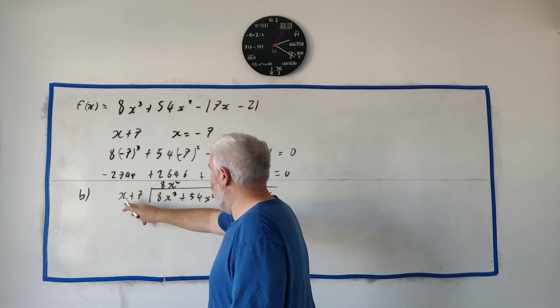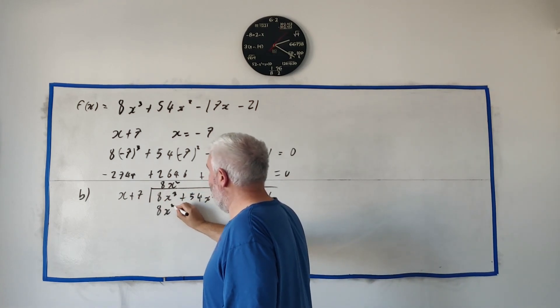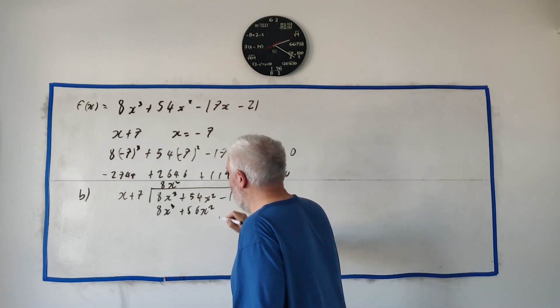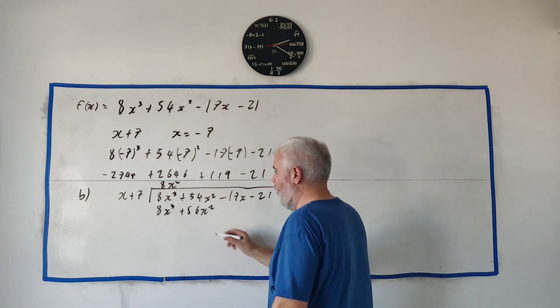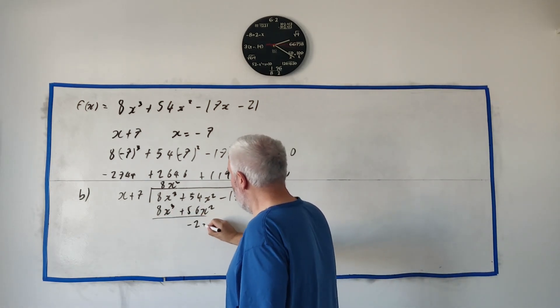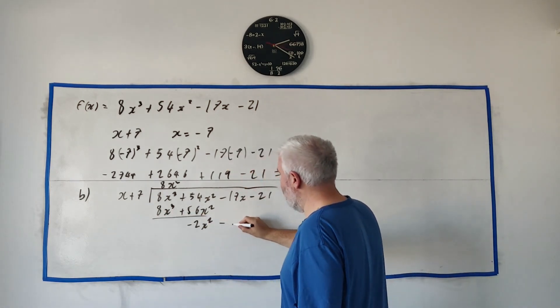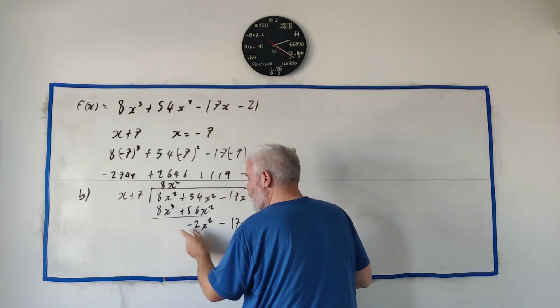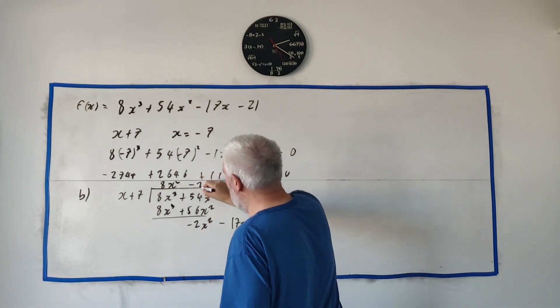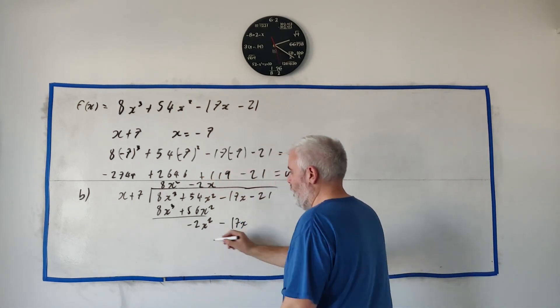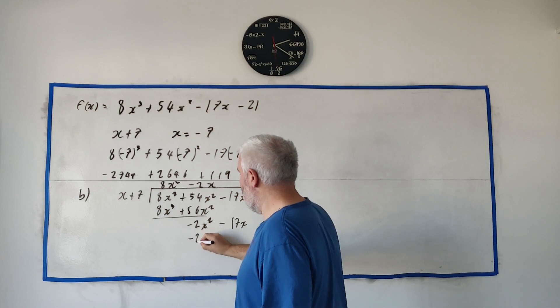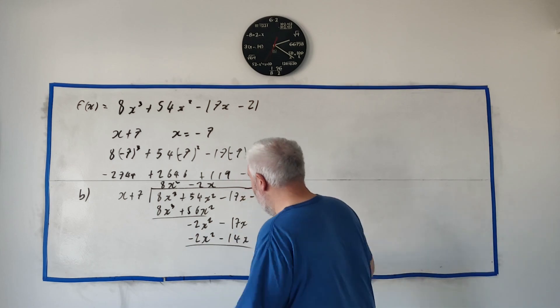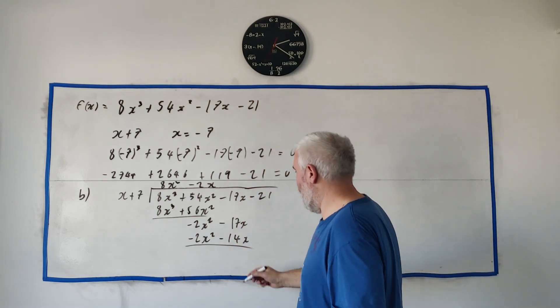So multiply it by this we hopefully get the same thing and 7 times 8 we get 56x squared. There's going to be a remainder is the difference here. If we take these away from each of them we get minus 2x squared. Didn't go in evenly let's take down the next term. How many times does x plus 7 go into this? Well the x goes into this minus 2x times. Again multiply it back across minus 2x squared minus 14x. What's the remainder here? We take them away and we find minus 3x.